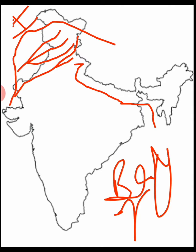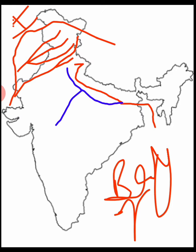The tributaries of Ganga are very important. First is Yamuna, which flows alongside Ganga. Yamuna's tributary is Chambal. We also have here Ghaggar, Gomati, Gandak, and Son — all of these are tributaries of Ganga.